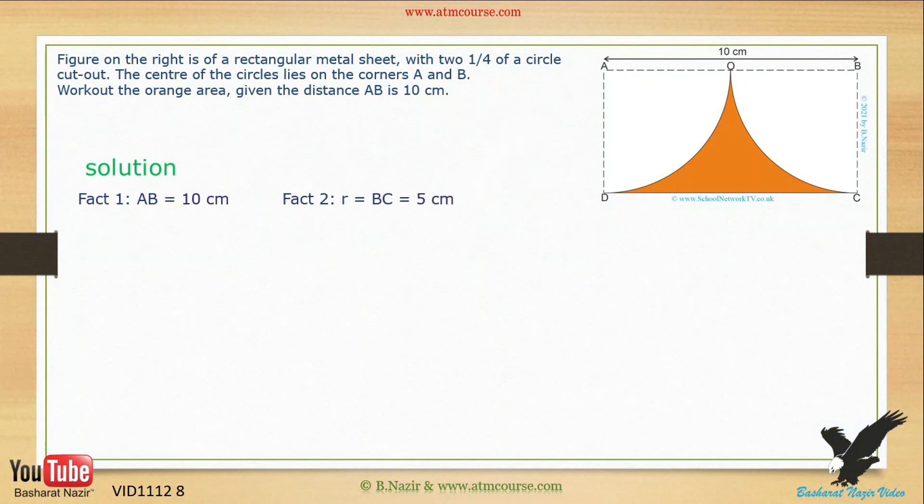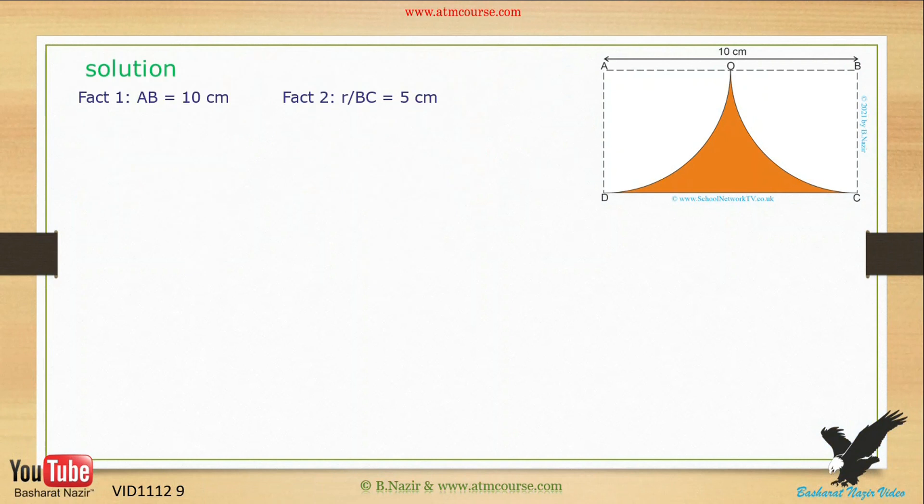Next, since we have a diagram, we need to mark some labels. In an exam, do this on the exam paper provided, using a pencil. Doing this will make it easy to answer the question. First label is the orange area, which the question wants us to work out. We will call this A1. Second label is the cutout area of the circle. We will call this A2. Finally, label the area of the rectangle. We will call this A.